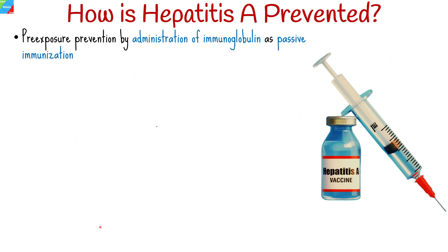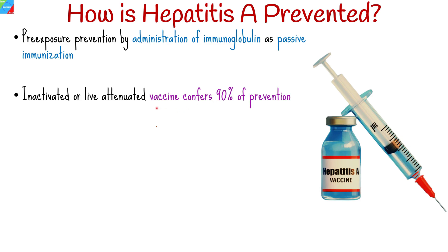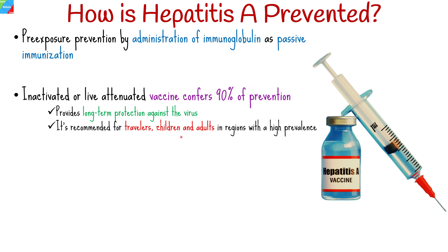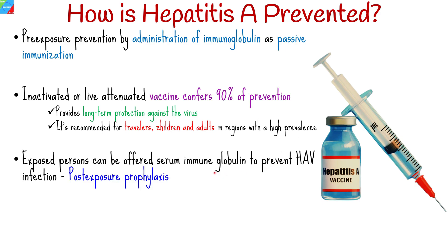Pre-exposure prevention of hepatitis A infection can be accomplished by administration of immunoglobulin as passive immunization, or by administration of one of the currently licensed vaccines for active immunization. Inactivated or live attenuated vaccine confers 90% prevention. The hepatitis A vaccine provides long-term protection and is recommended for travelers visiting high-risk countries, children and adults in high-prevalence regions, and individuals with chronic liver diseases or compromised immune systems. Persons exposed to hepatitis A can also be offered serum immune globulin as post-exposure prophylaxis to prevent infection or reduce its extent and severity.